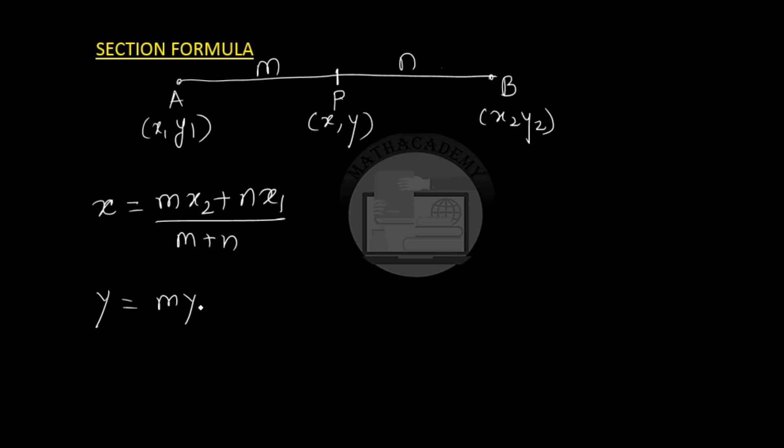The section formula says that if we have two points A and B with coordinates x1, y1 and x2, y2, and if the join of A and B is divided by the point P in the ratio m is to n, the coordinates of P being x and y, then according to the section formula, x equals m times x2 plus n times x1 over m plus n. And similarly, y equals m times y2 plus n times y1 over m plus n.